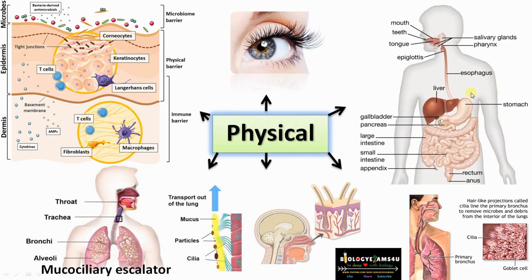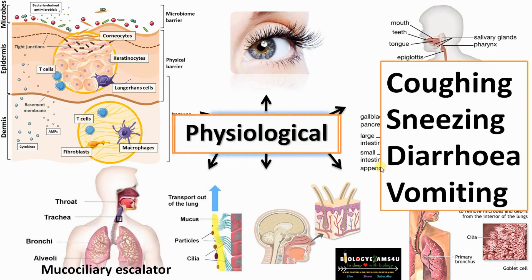Trapped microorganisms are expelled either by coughing or sneezing, or moved down into the stomach where they are destroyed. Along with that, physical barrier-associated physiological responses such as coughing, sneezing, diarrhea, and vomiting forcefully expel microorganisms from the system.